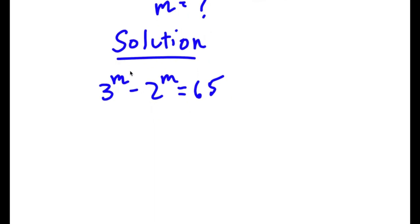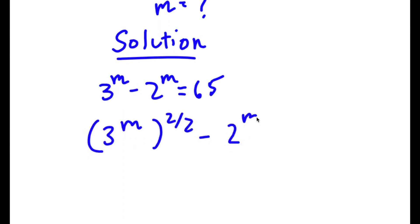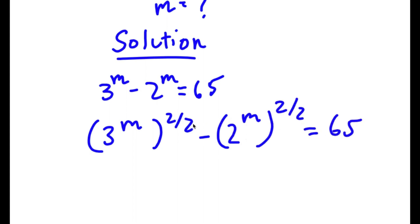Now 3 to the power of m is the same thing as 3 to the power of m to the power of 2 over 2, minus 2 to the power of m to the power of 2 over 2. Since 2 over 2 equals 1, this is the same thing as 3 to the power of m to the power of 1, which is just 3 to the power of m — and similarly 2 to the power of m. So the expression remains unchanged.